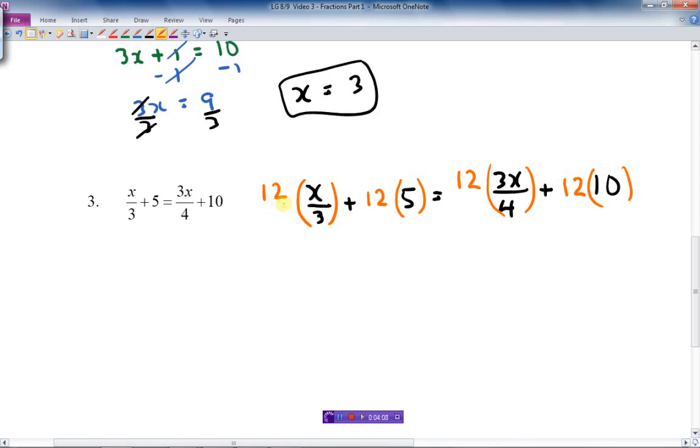Now this is a fraction, so I put 12 over 1. 3 goes into 12 four times. Four times x is 4x. Twelve times 5 is 60. Equals... Four goes into 12 three times. Three times 3x is 9x plus 12 times 10 is 120. It's an easy multiplication. There. No more fractions. So let's solve this.